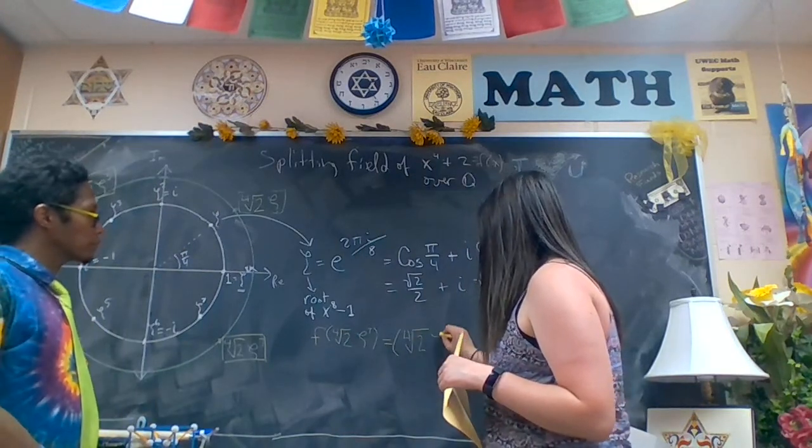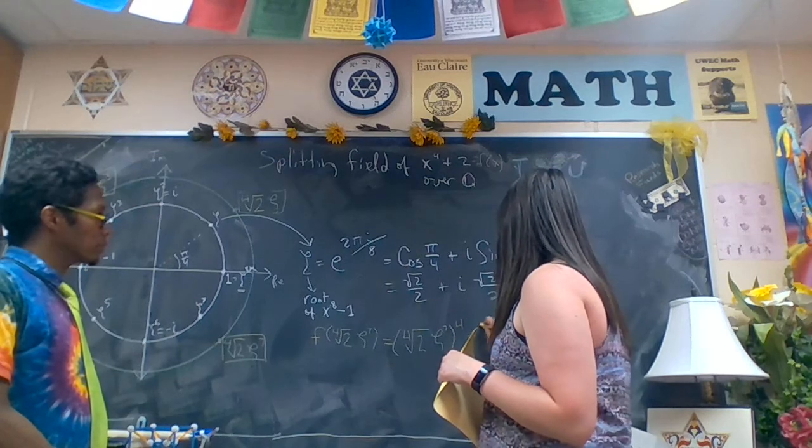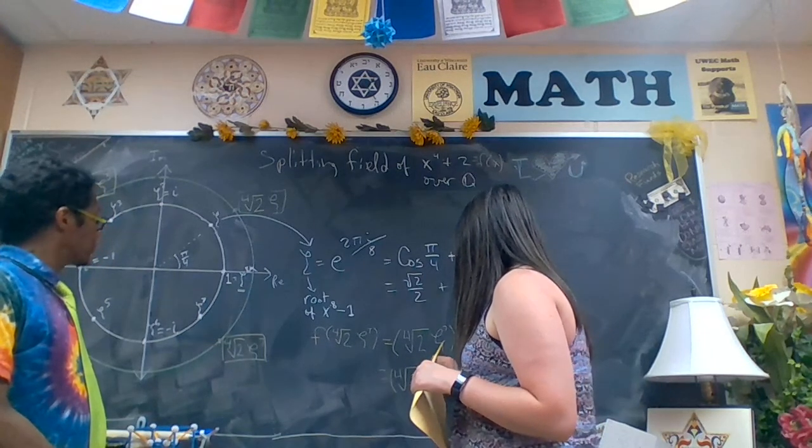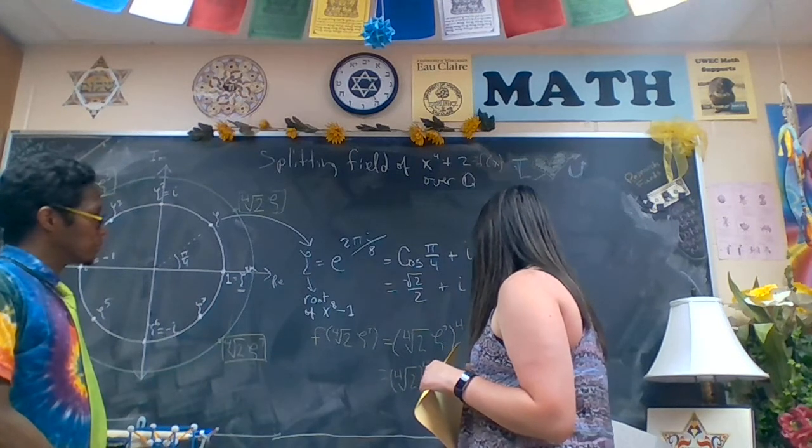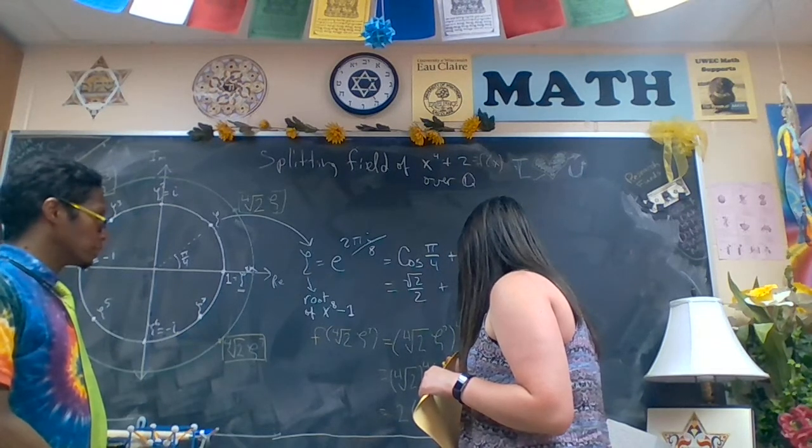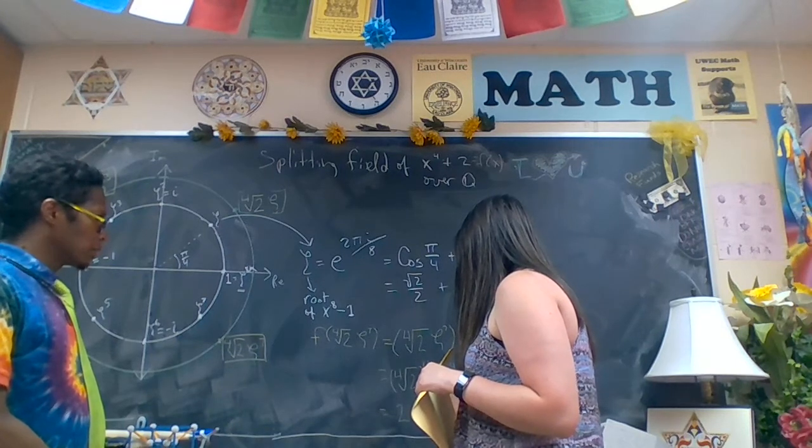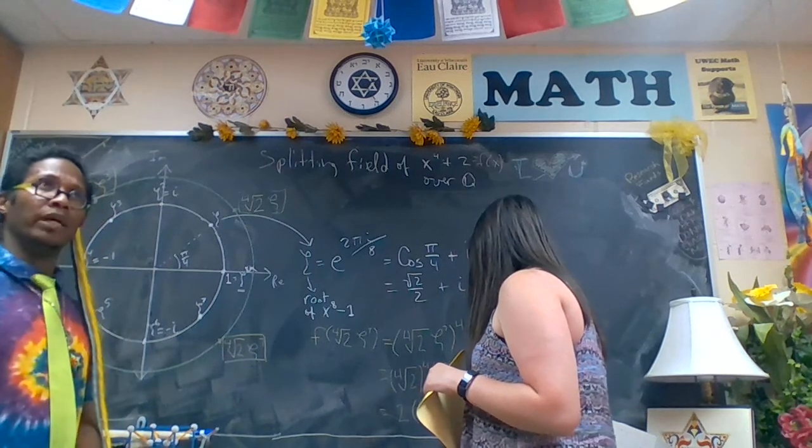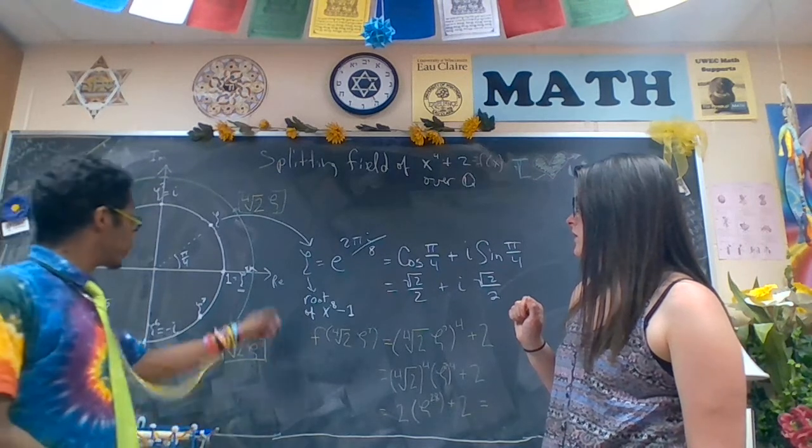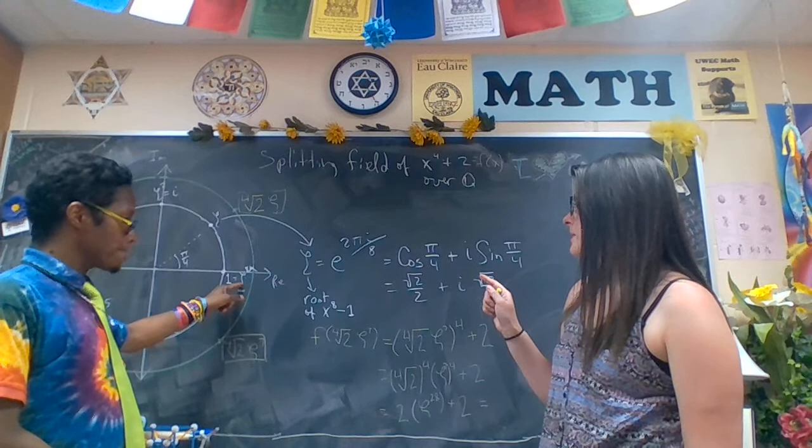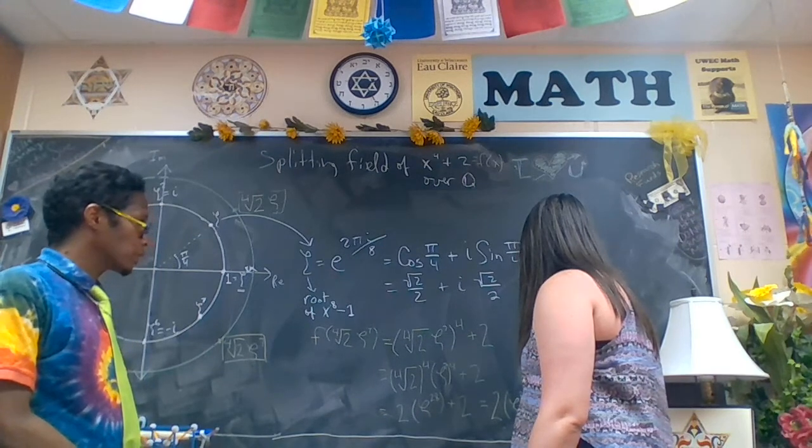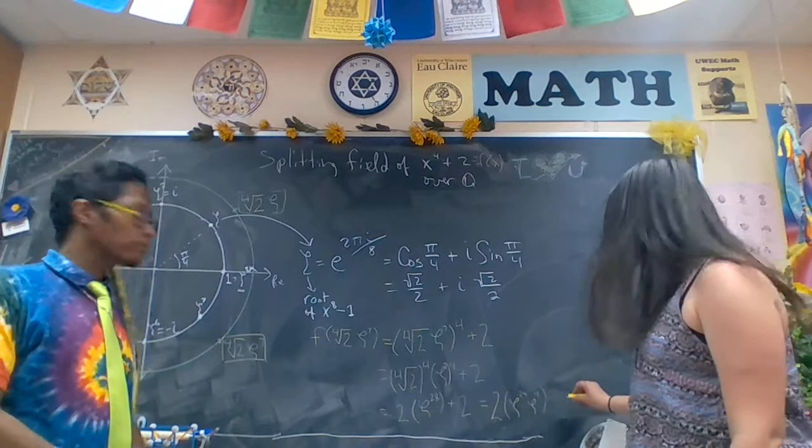So, this to the fourth is just 2. This is to the zeta. Zeta to the 28. So, how many will take a bunch of 8's out of there? So, you can write that as zeta to the 24th times zeta to the 4th. Zeta to the 24th would just be 1. So, zeta to the 24th times zeta to the 4th. Plus 2.